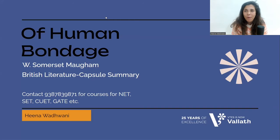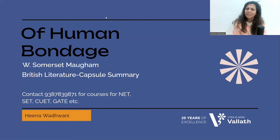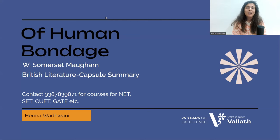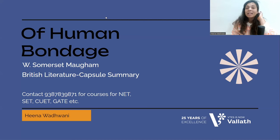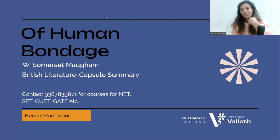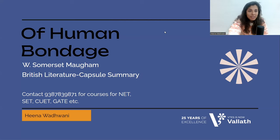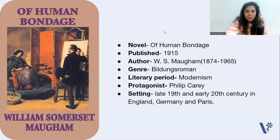Of Human Bondage — what is it about? Stability? Instability? Choices? Confusion? We'll come to know in today's capsule summary. Hello, how are you? This is Heena from Team Wallach. Today's novel of discussion under British literature is Of Human Bondage, written by William Somerset Maugham.